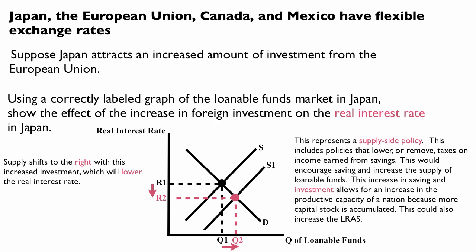Supply-side policies include policies that lower or remove taxes on income earned from savings, which would encourage saving and increase the supply of loanable funds. This increase in saving and investment allows for an increase in the productive capacity of a nation because more capital stock is accumulated, and could also increase the long-run aggregate supply curve.